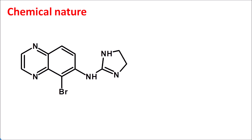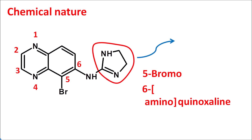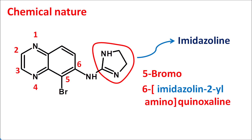Now let us see the chemical structure of brimonidine. There is a six-plus-six member ring system. Starting the numbering from nitrogen: positions one through six form the quinoxaline ring. At the fifth position, a bromine group is present; at the sixth position, an amino group is present. Attached to this amine is an imidazoline ring, giving the name: 5-bromo-6-amino-quinoxaline with an imidazolin-2-yl group.